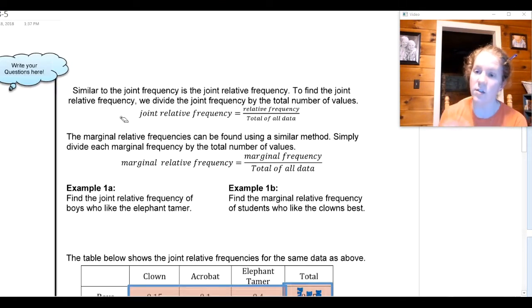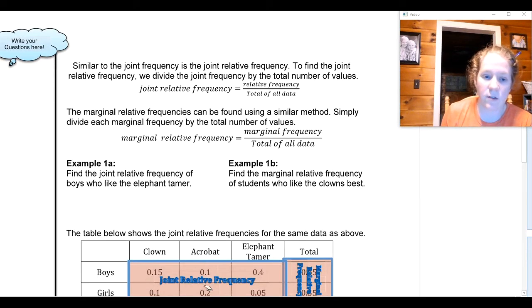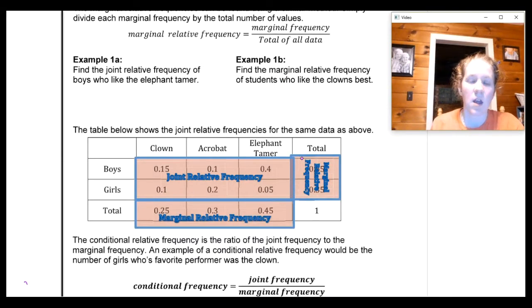We can also look at relative frequencies. Relative frequencies are basically just your ratios. If I want to find a joint relative frequency then that means I'm going to take a joint frequency and divide it by the number of data values. I'm going to change this a little bit and instead of saying relative frequency I'm going to say the joint frequency divided by the total pieces of data. A marginal relative frequency is exactly what it sounds like. I'm going to take my marginal frequency and divide it by the total amount of data. Here's what an example would look like using this vocabulary.